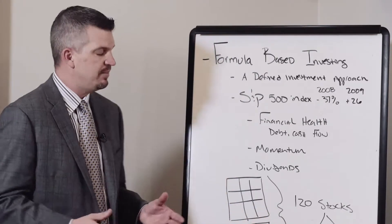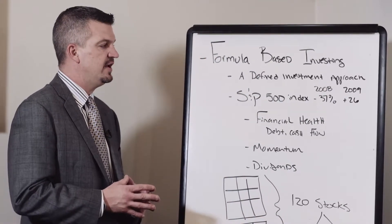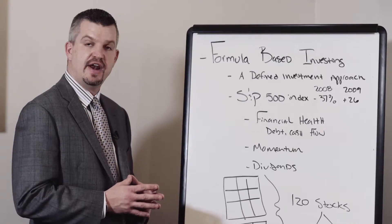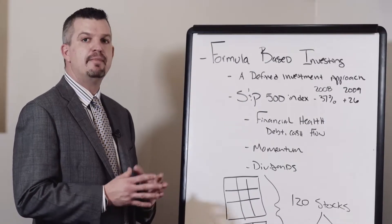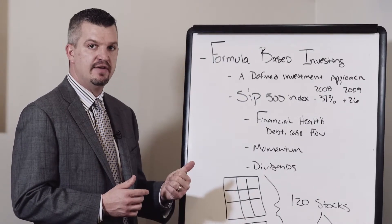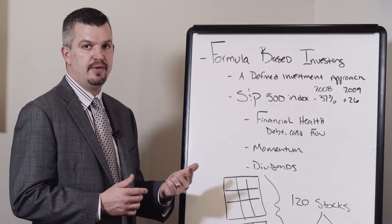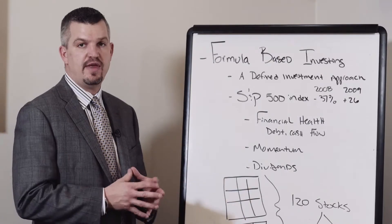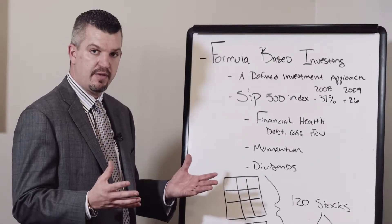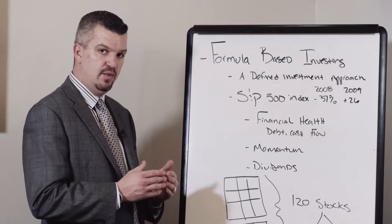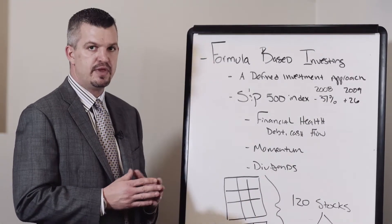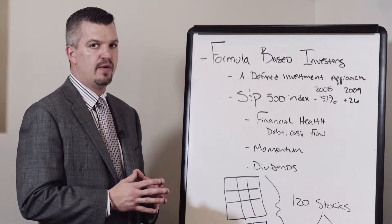As an example, if we took the S&P 500 index, what we could do is look at the financial health of companies. By financial health, I'm looking at how much debt they have, how much revenue they have coming in the door, and how much money they have in the bank. All of this information is public information. We could then look at the top half of the group and eliminate the bottom half.